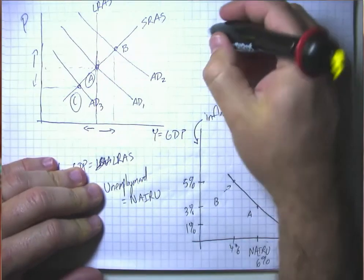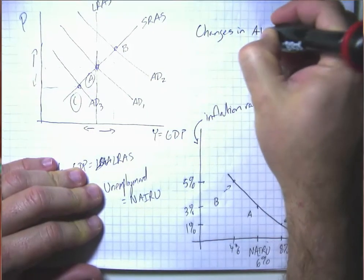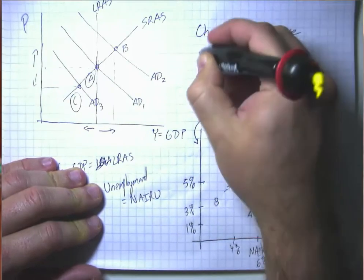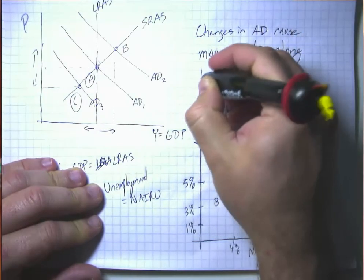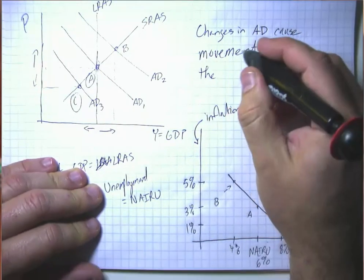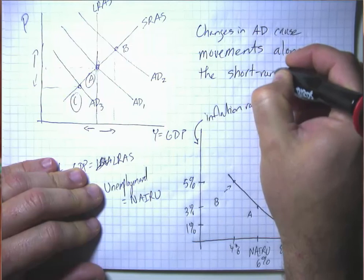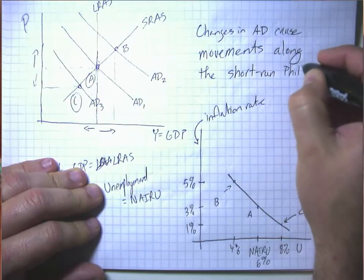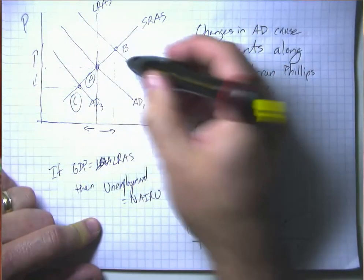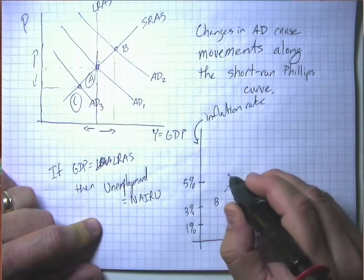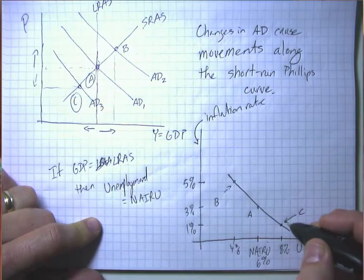So key thing here, changes in aggregate demand cause movements along the Phillips curve. And just to be clear, because we're going to make this more complicated here in a second, the short run Phillips curve. And in particular, an increase in aggregate demand causes us to move left along the Phillips curve. And a decrease in aggregate demand causes us to move right along the Phillips curve.